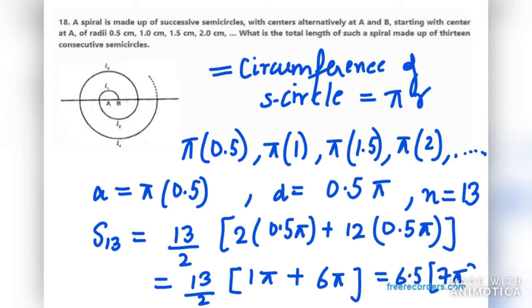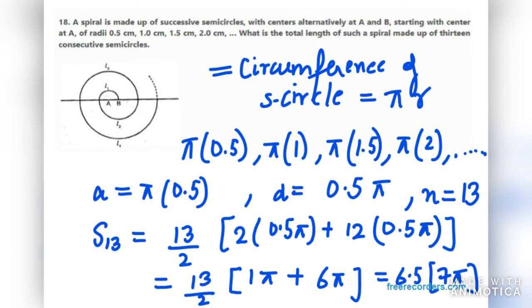6.5 into 7π is equal to 45.5π. And when you times it by 22 over 7, you will get your answer as 143 centimeters. That means the total length of the spiral in this case is 143 centimeters. So that's your answer for question number 18.